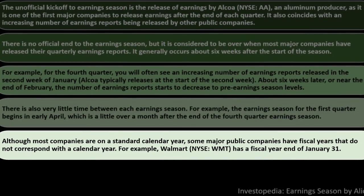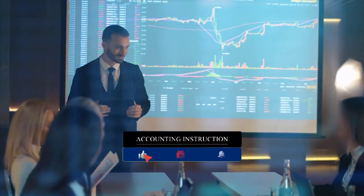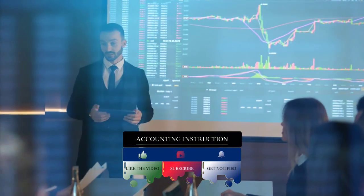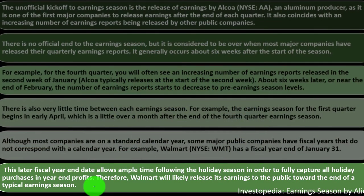Although most companies are on a standard calendar year, some major public companies have fiscal quarters that do not correspond with the calendar year. For example, Walmart — NYSE: WMT — has a fiscal year end of January 31st. This later fiscal year end allows ample time following the holiday season to fully capture all holiday purchases in year-end profits. Therefore, Walmart will likely release its earnings toward the end of a typical earnings season.